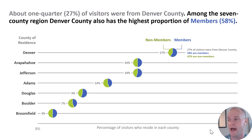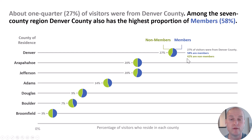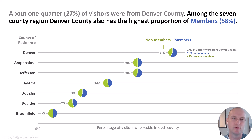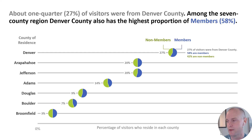Then I thought maybe I could combine the dot plot and the pie charts, so I had the dot plot go to the percentage of visitors and embedded a pie chart inside each of the dots, still annotating it over here. If you spend some time with the slide you can understand it. I really didn't think people would like this option — it probably isn't the best to understand at a glance — but I thought it was an interesting technique.